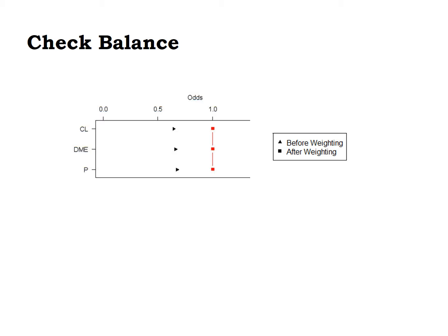It is also important to check that once you have weighted the data, you achieve balance. At the top we have the odds of the covariates given treated and untreated groups; on the left-hand side are the covariates. The triangles show the odds before weighting, and the red squares show the odds after weighting. We can see that the odds are one-to-one among the treated and untreated groups for all three covariates — all three covariates have been balanced.